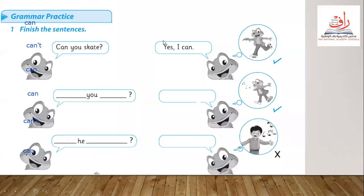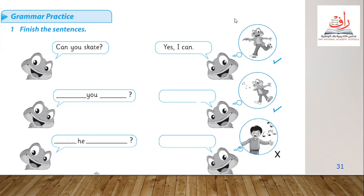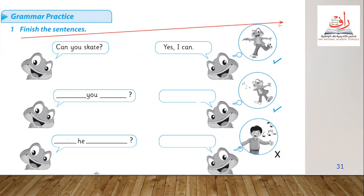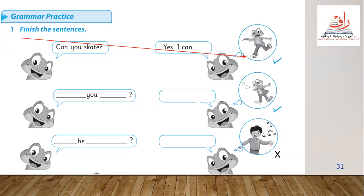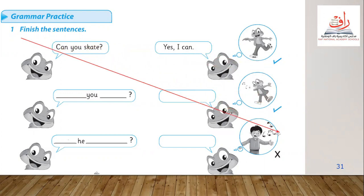Let's go to grammar practice for workbook page 31. I'm going to clean my page and write page 31. The question says: finish the sentences. Can you skate? Let's read it as a question — 'Can you skate?' Let's go to Mr. Frog. We can see Mr. Frog using the skate, and here they put a tick — true means yes, X means no. Can you skate? Yes, I can.